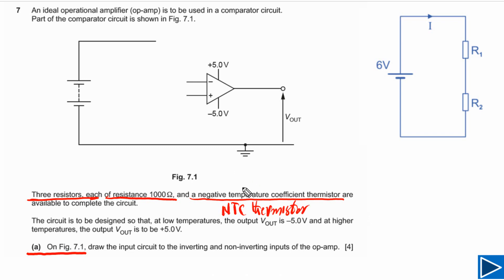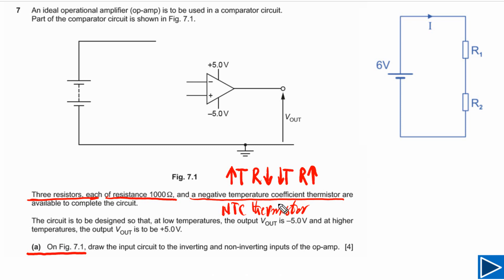The NTC thermistor simply means that the resistance of this thermistor depends on temperature. When the temperature is higher, the resistance will be lower, and when temperature is low, the resistance will be higher. This is a very important point — the NTC thermistor is a special kind of resistor whose resistance depends on temperature.